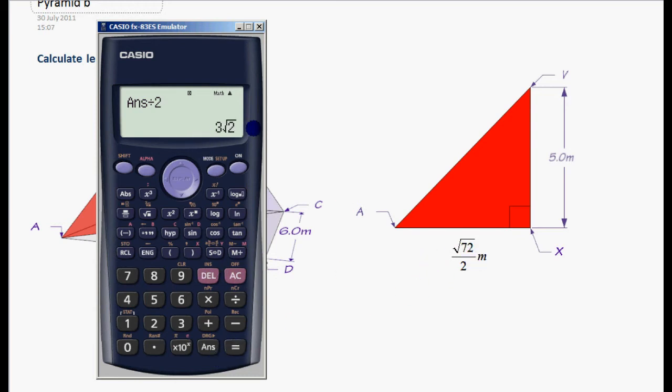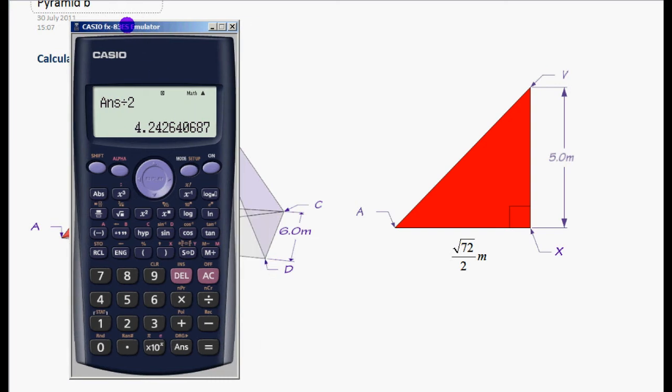They simplified it to root 3 times square root of 2. That's another lesson to tell you how to turn this into this. But for now we'll just accept that. Or you can use the decimal. Whatever it is, you can use the whole calculator answer.